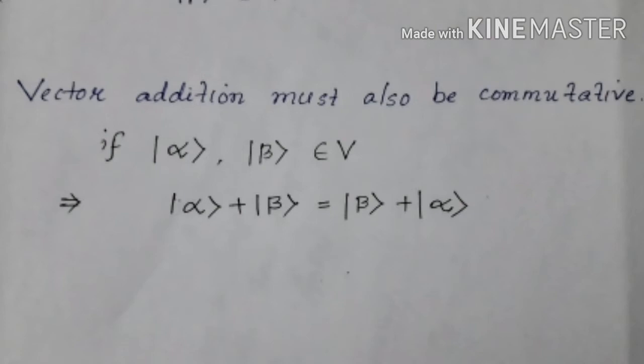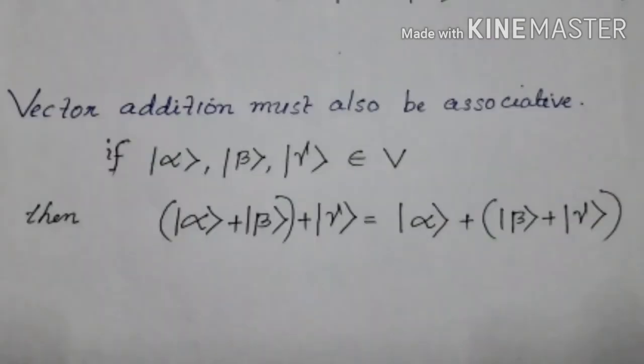Vector addition must also be commutative — that is, if ket vector alpha and ket vector beta belong to vector space V, then ket vector alpha plus ket vector beta equals ket vector beta plus ket vector alpha. Vector addition must also be associative — that is, if ket vector alpha, ket vector beta, and ket vector gamma belong to V, then ket vector alpha plus ket vector beta plus ket vector gamma equals ket vector alpha plus ket vector beta plus ket vector gamma.